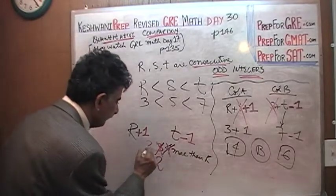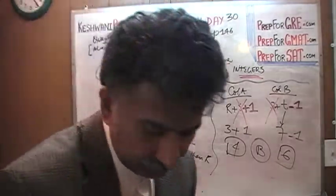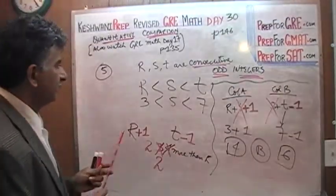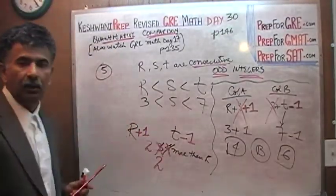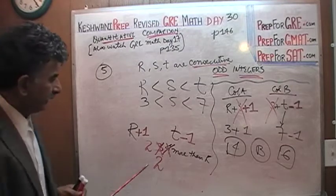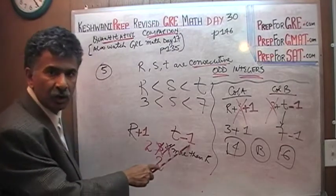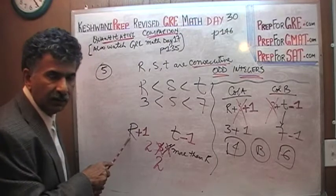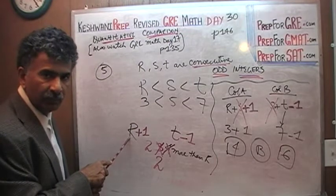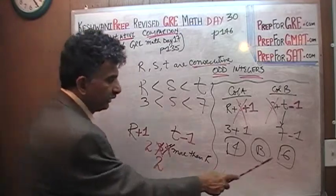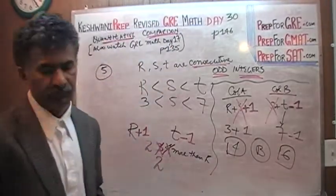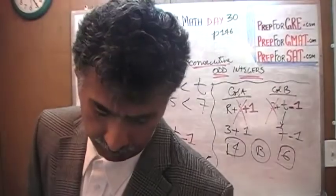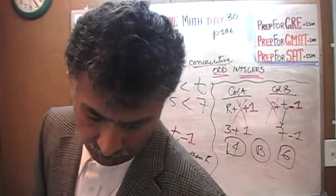The difference is only going to be 2. Originally, the difference, one more time. Originally, the difference between T and R would have been 4. But then, we subtract 1 from this guy, hence reducing the difference to 3. And then, we add 1 to this guy, R, hence reducing the difference even more down to 2. This quantity, column B, is always going to be 2 more than the other quantity. That's what I want you to understand.